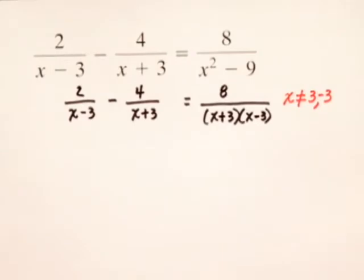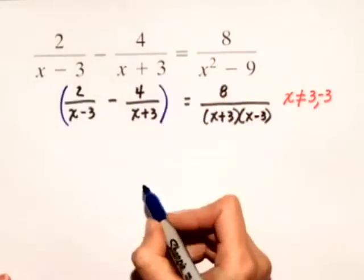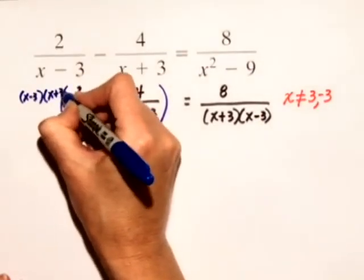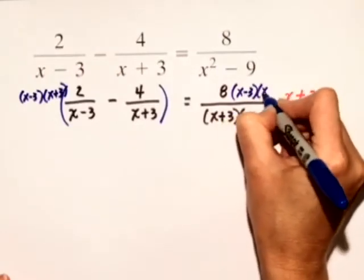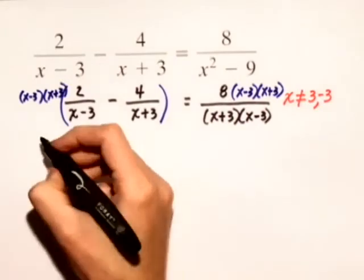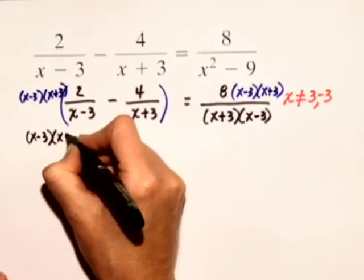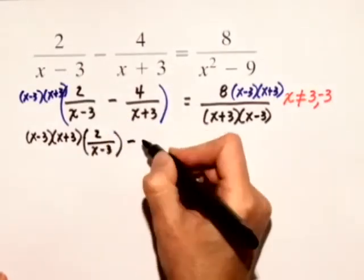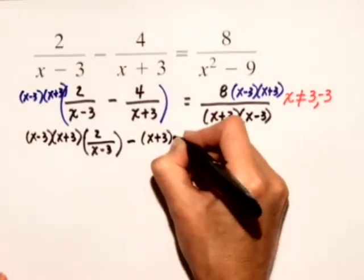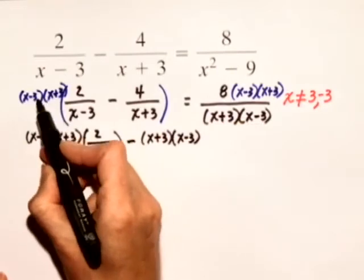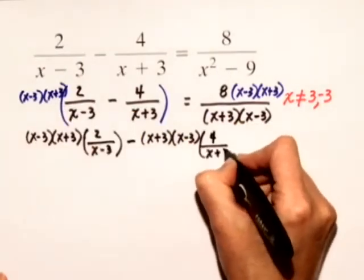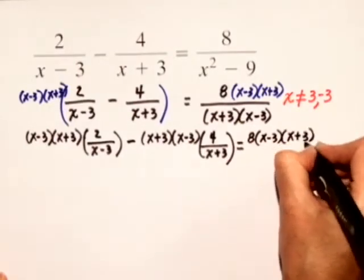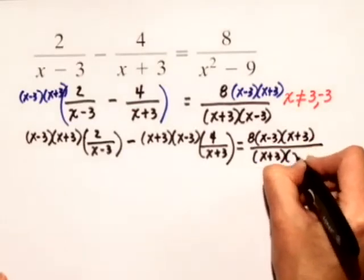Now let's get on to solving the equation. So we're going to multiply both sides of this equation through by the quantity x minus 3 times x plus 3 on both sides. And when we do that, we're going to have x minus 3 times x plus 3 times 2 over x minus 3. When we distribute that through, we have minus x plus 3 times x minus 3 times 4 over x plus 3 equals, on the right-hand side, 8 times the quantity x minus 3, x plus 3 over x plus 3 times x minus 3.